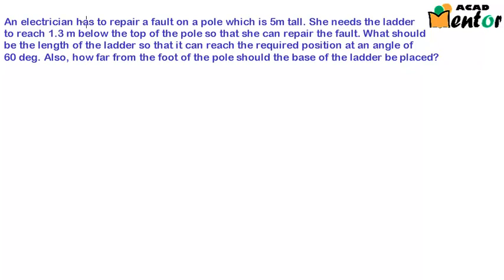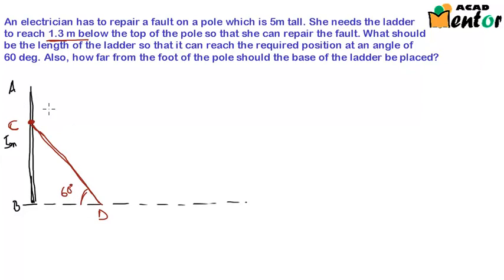Now the first step to go about this problem is to draw a figure. We are given a vertical pole of length 5 meters. So there will be a vertical pole something like this. Let's call this AB. So AB is given as 5 meters. Now we need to place a ladder on the ground such that the angle is 60 degrees. So let this be the ground. Let me draw a ladder that reaches 1.3 meters from the top here. So let this be point C and this is the ladder. Let this be point D. So this ladder forms an angle of 60 degrees and point C is 1.3 meters below point A. So AC is equal to 1.3 meters.